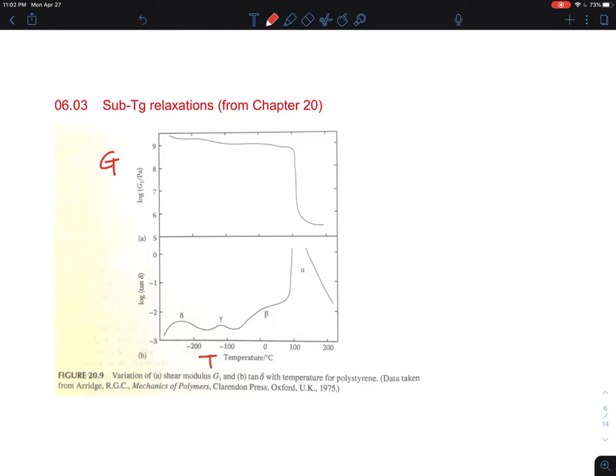You can see that the modulus quickly drops for polystyrene. That significant drop is at the glass transition temperature. If you do DMA, Dynamic Mechanical Analysis, you're measuring tan delta, also in log scale here. If you measure tan delta, around the Tg this is alpha, and then there's beta, gamma, and delta. Those are the different sub-Tg relaxations.